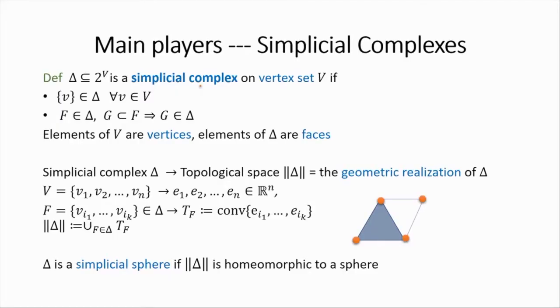Some parts of it are very surprising, or at least I think they are. So let me slowly start introducing all the objects, and please feel free to interrupt if you have any questions. One of the main objects of this talk is going to be a simplicial complex. So all complexes in this talk will be finite. Let's start with an abstract simplicial complex. To define it, you start with a finite set V, which we're going to call the vertex set.